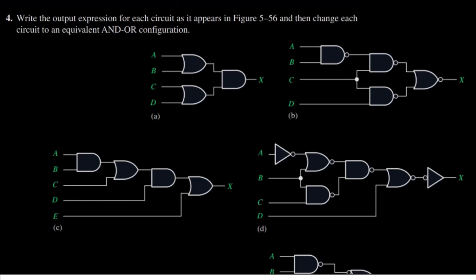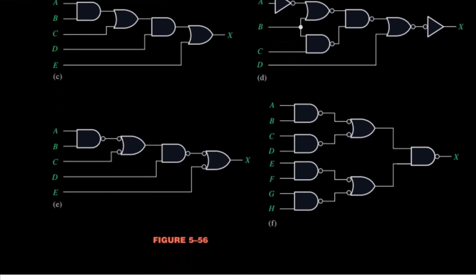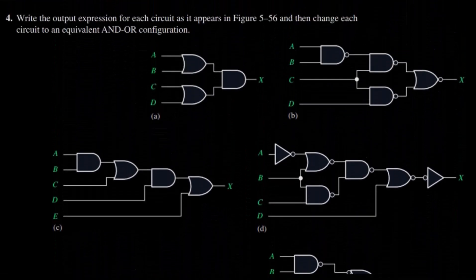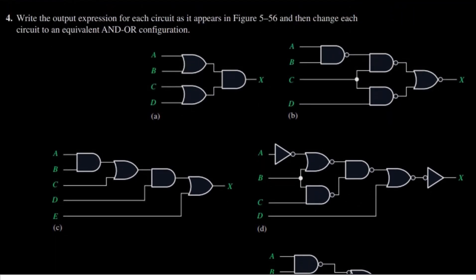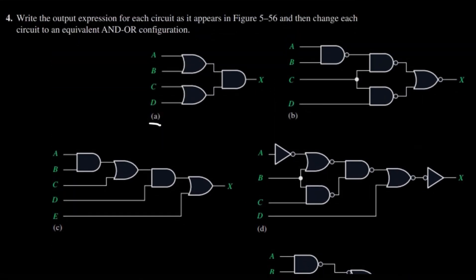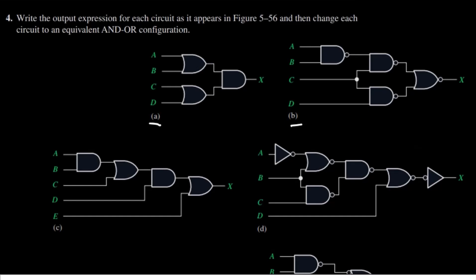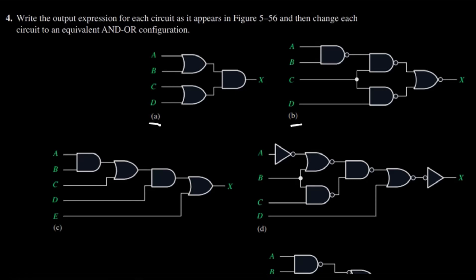Welcome back guys. This is question number 4 and here we are asked to write the output expression for each of the circuits as they appear in figure 5.56. This figure consists of many parts which are A, B, C, D, E and F, but today we are going to solve just part A and B, and then change each circuit to an equivalent AND/OR configuration.